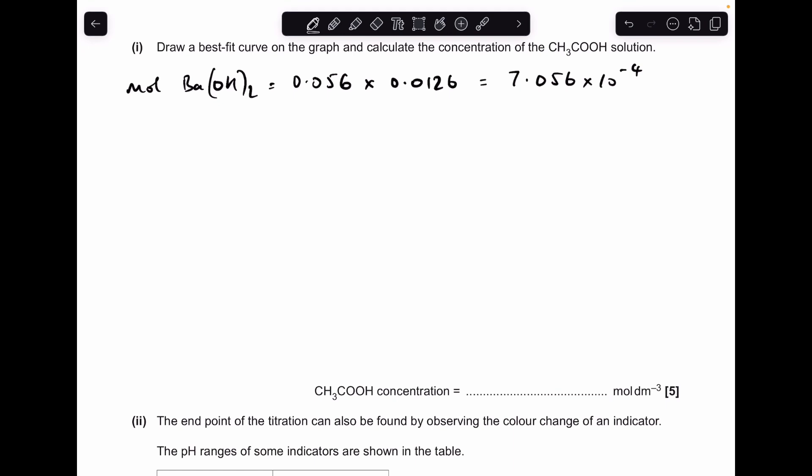So first thing we'll do is calculate the moles of barium hydroxide used. So concentration times volume in decimeters cubed. So using my endpoint of 12.6, I'm getting the moles of 7.056 times 10 to the minus four. And then we use the mole ratio in the equation to get the moles of ethanoic acid. Remember it's a 1 to 2 ratio, so we double the moles of barium hydroxide, so my answer is coming out at that.